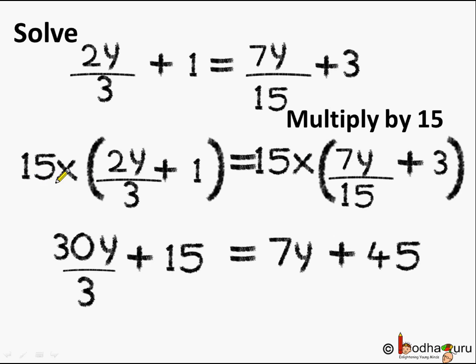Here we get multiplying 15 by 2y, we get 30y. Numerator is 30y and denominator is 3. Plus we multiply 15 by 1 which is 15.